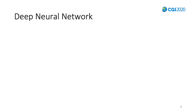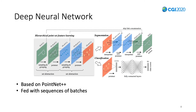The batches are now in the correct format to feed our deep neural network — this is the third step of our method. The deep learning architecture is a version of PointNet++ modified to accept batches of enriched points. Both input and output vectors are of size 2048. The inputs are six-dimensional points, and the outputs are two-dimensional scores, one for each class.